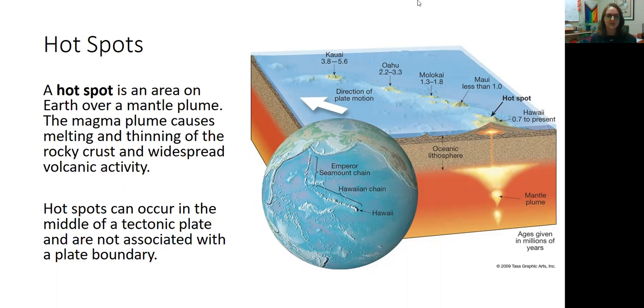So a hot spot is the area on the earth over a mantle plume, but just a single isolated mantle plume rather than an entire boundary with hot magma welling up to the surface, creating a mid-ocean ridge. There's just one tiny little plume all on its own, often in the middle of a plate, not associated with the plate boundary.